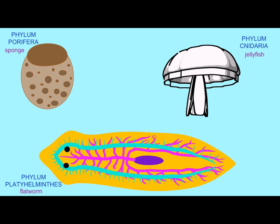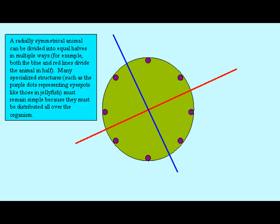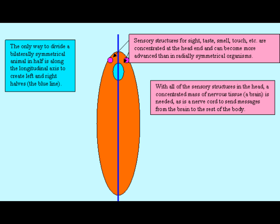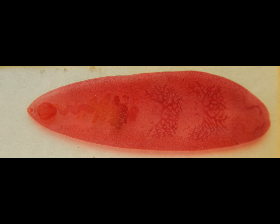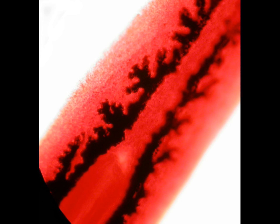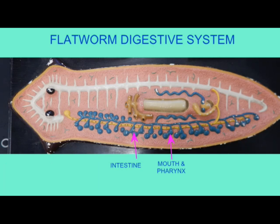You should recognize that while cnidarians are radially symmetrical, all of the bilaterians are bilaterally symmetrical. This was significant because once an end was chosen to be the front, this is where sensory structures and nervous tissue to analyze senses accumulated, so this was the origin of both the head and the brain.